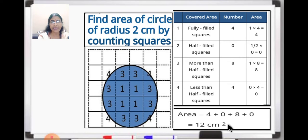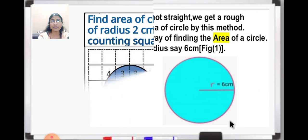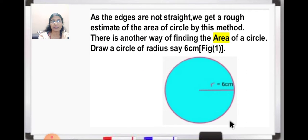Now this way we have got the area. We have to find out the total area. Total area: we are going to add 4 plus 0 plus 8 plus 0. On addition you will get 12 centimeter square. But this is the area which we have calculated — it doesn't give you the accurate area of the circle. It gives you a rough estimate of the area of the circle. So today we are going to learn how to find out the accurate area of a circle.